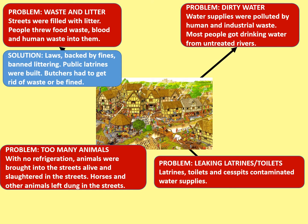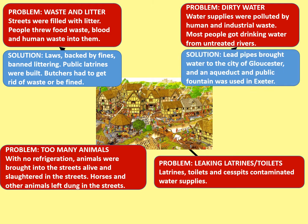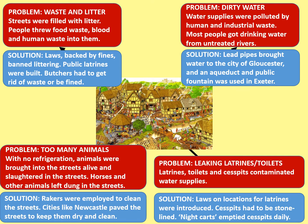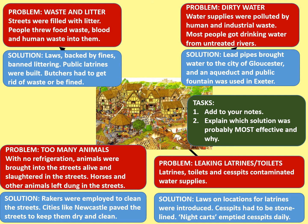But there are solutions. Laws backed by fines banned littering. Public latrines were built. Butchers had to get rid of waste or be fined. Lead pipes brought water to the city of Gloucester, and an aqueduct for public fountains was used in Exeter. Laws on locations for latrines were introduced, cesspits had to be stone-lined to stop them leaking, and night carts emptied the cesspits daily so they didn't overflow. Rakers were employed to clean the streets, and cities like Newcastle paved the streets to help keep them dry and clean. Add to your notes and explain which solution was probably most effective and why.